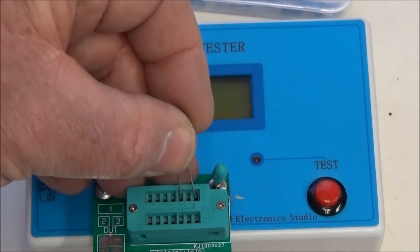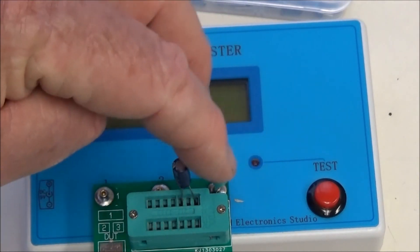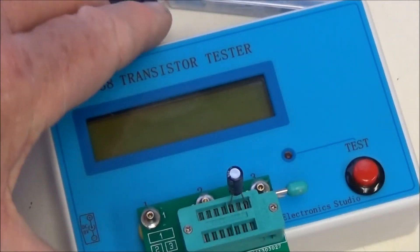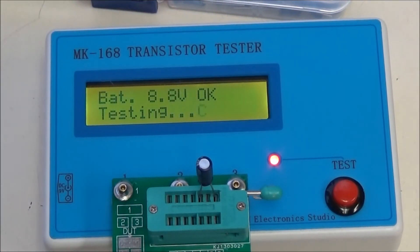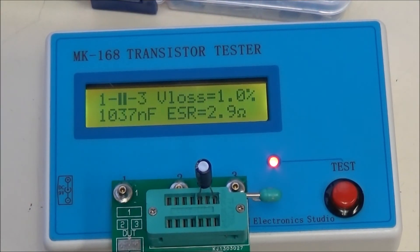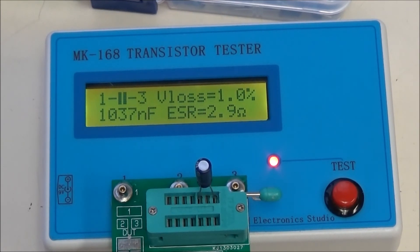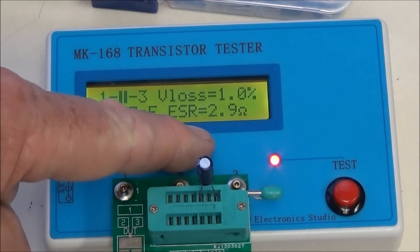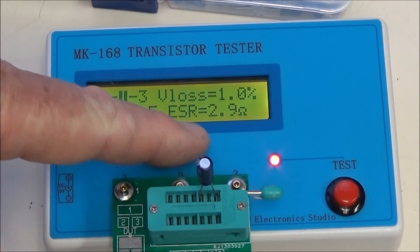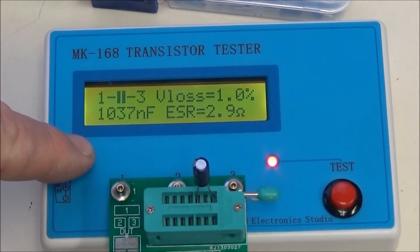Here's a small electrolytic capacitor. Clamping in, press test. Okay, it's a 1 microfarad. When it says 1037 nanofarads, that's 1.037 microfarads. But now look at the ESR on this baby - 2.9 ohms on a fairly small value capacitor.